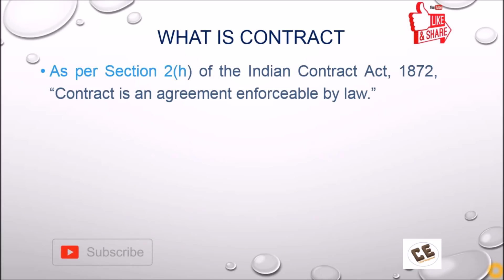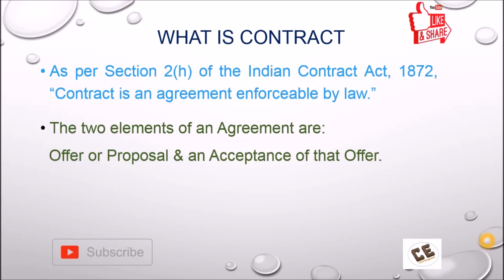As per Section 2H of the Indian Contract Act 1872, a contract is an agreement enforceable by law. This question can be asked in an interview also — what is a contract? So this is the best definition: as per Section 2H of the Indian Contract Act 1872, a contract is an agreement between two parties which is enforceable by law.